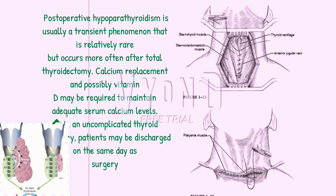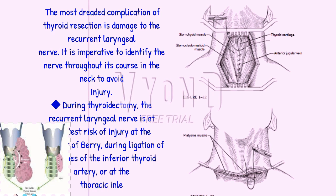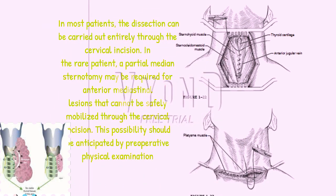In an uncomplicated thyroid lobectomy, patients may be discharged on the same day as surgery. The most dreaded complication of thyroid resection is damage to the recurrent laryngeal nerve. It is imperative to identify the nerve throughout its course in the neck to avoid injury. During thyroidectomy, the recurrent laryngeal nerve is at greatest risk at the ligament of Berry, during ligation of branches of the inferior thyroid artery, or at their ligation. In most patients, the dissection can be carried out entirely through the cervical incision. In the rare patient, a partial median sternotomy may be required for anterior mediastinal lesions that cannot be safely mobilized through the cervical incision. This possibility should be anticipated by preoperative physical examination.